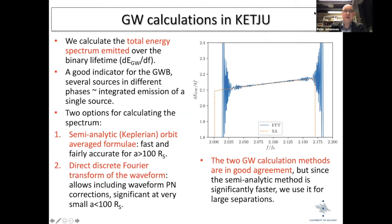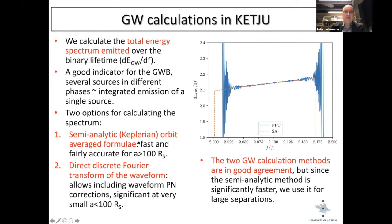Next, we calculated the total energy spectrum of the gravitational waves. We didn't have a cosmological volume, so instead we calculated the total energy emitted over the binary lifetime as an indicator of the gravitational wave background. We used two methods: a semi-analytic Kepler orbit-averaged formula, which is fast and accurate for separations greater than about 100 Schwarzschild radii, and a direct discrete Fourier transform of the waveform allowing inclusion of waveform PN corrections. The two methods agree well in the overlapping regime.